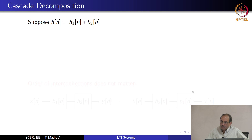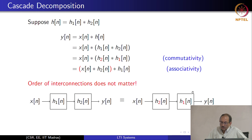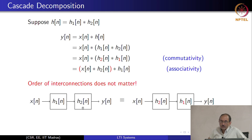For cascade decomposition, if h of n equals h1 convolved with h2, you can interchange the order using commutativity and reassociate using associativity. This tells us that the order of interconnections does not matter. If you have a high-order system broken into h1 and h2, there are conditions under which you want to interchange the order. When you study digital filters, you will find that for certain noise criteria it makes sense to order the subsystems one way, and the opposite ordering is needed for another criterion.